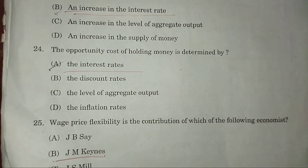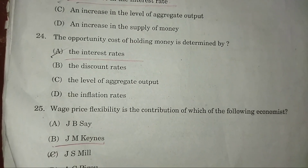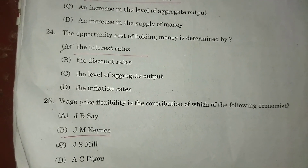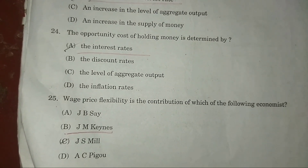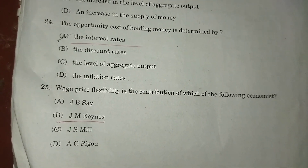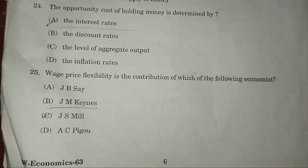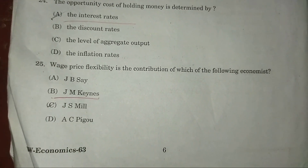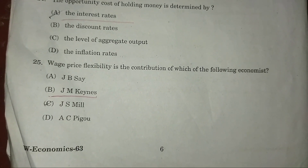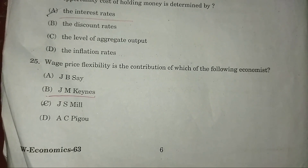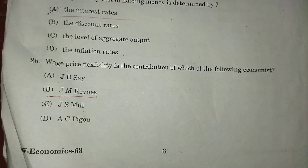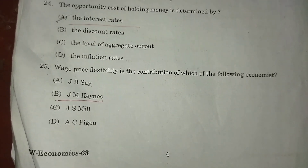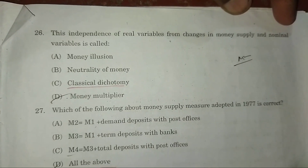Question 24: The opportunity cost of holding money is determined by — answer: A — the interest rate. Question 25: Price flexibility is the contribution of which economist? Answer: B — James Meade.